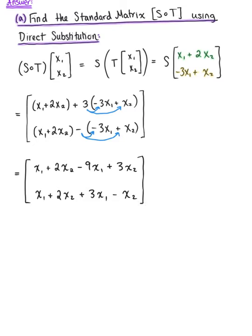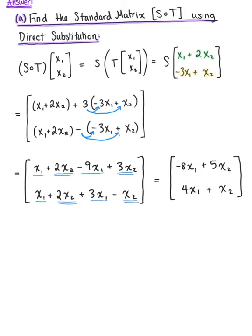Now grouping like terms: in equation 1, −9x₁ + x₁ gives −8x₁, and 2x₂ + 3x₂ gives +5x₂. Equation 2 simplifies to 4x₁ + x₂. Rewriting in matrix equation form, we have the 2×2 matrix [−8, 5; 4, 1] multiplied by the vector (x₁, x₂).